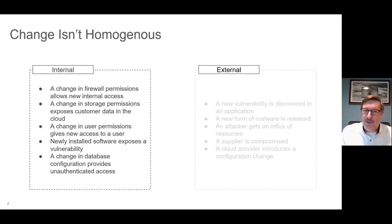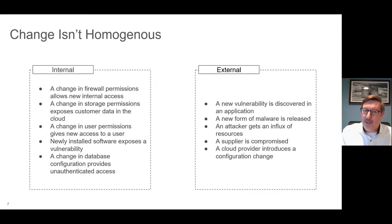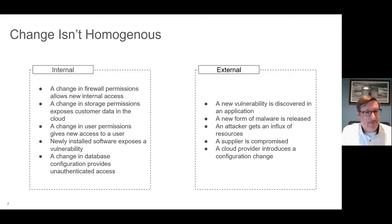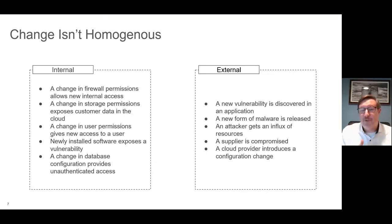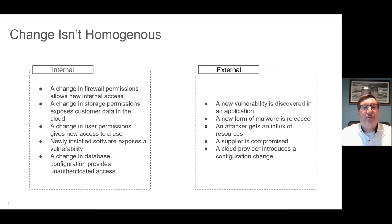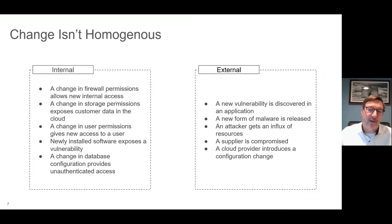There are also external changes that can generate incidents. A new vulnerability might be discovered in an application — it isn't vulnerable, a new vulnerability is discovered, now it is. You haven't changed something internally, but that external change has created an opportunity for internal risk. A new form of malware might be released. An attacker might get an influx of resources — not a technical change, but an attacker who previously couldn't carry out their attack now has the resources to do so. A supplier in your supply chain might be compromised, or a cloud provider might introduce a configuration change that introduces risk for you.